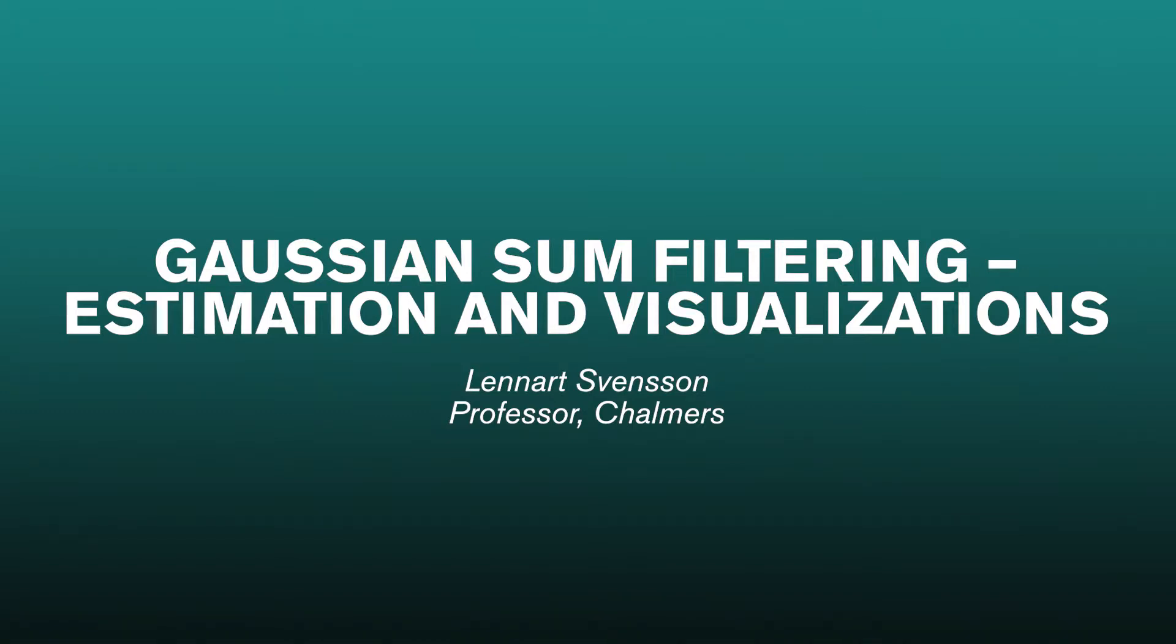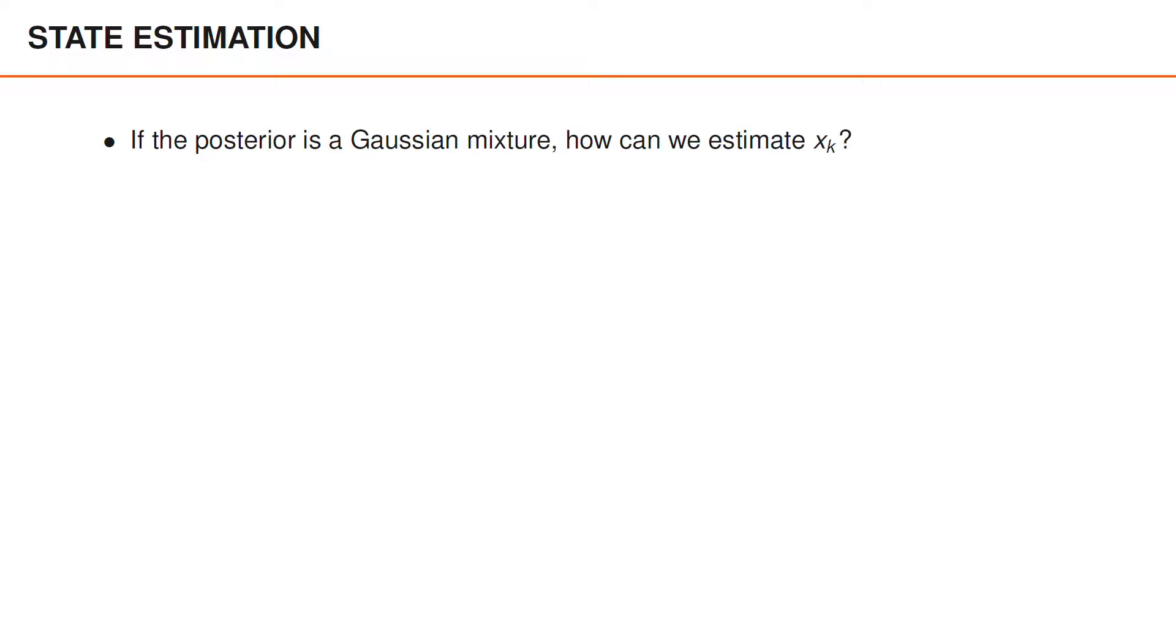So far, we haven't really said anything about state estimation, and I'd like to mention briefly how that can be done. When we approximate the posterior as Gaussian, like in a nearest neighbor or a PDA filter, the posterior mean is a natural estimate of the state vector, and that is generally what we use.